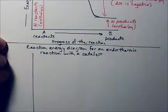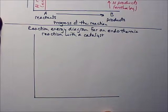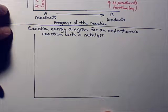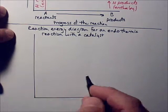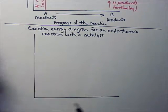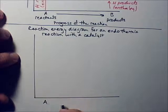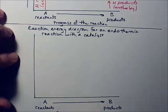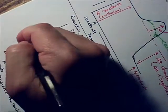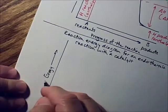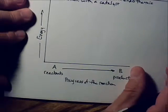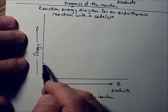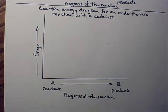Now I'm going to do one for an endothermic reaction. With an endothermic reaction, instead of energy leaving the system and leaving the bonds overall, we have to be putting energy into those bonds. So our products have to have more energy than our reactants did, because we're taking energy from the surroundings and putting it into the system. We have reactants on this side and products on this side, and the reaction still progresses from left to right.